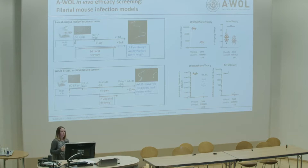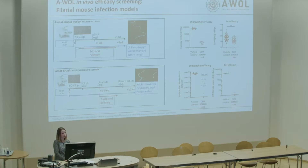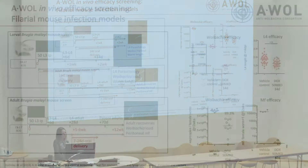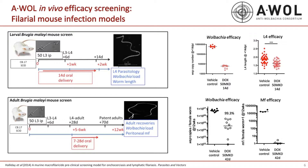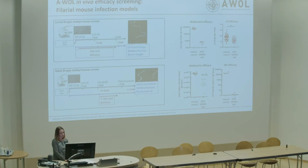We also have in vivo efficacy models. The larval screen gives a two-week readout — we look for a reduction in Wolbachia surface protein copy number by qPCR, showing Wolbachia has been depleted, and also an effect on L4 length because larvae can't develop fully without Wolbachia. Then the adult worm model has a much longer timeframe, which is why we filter through the larval model first. Hits here show reduction in WSP and reduction in microfilariae due to effects on embryogenesis.